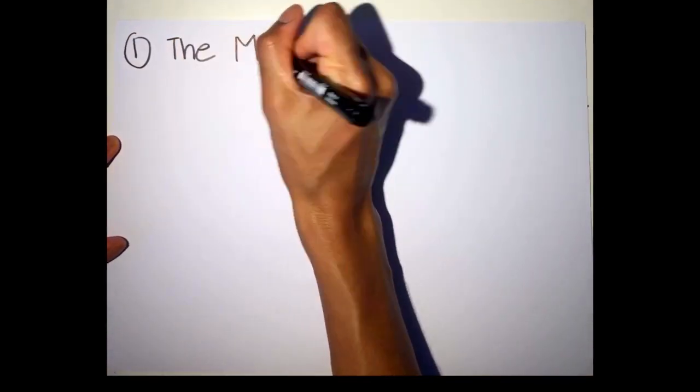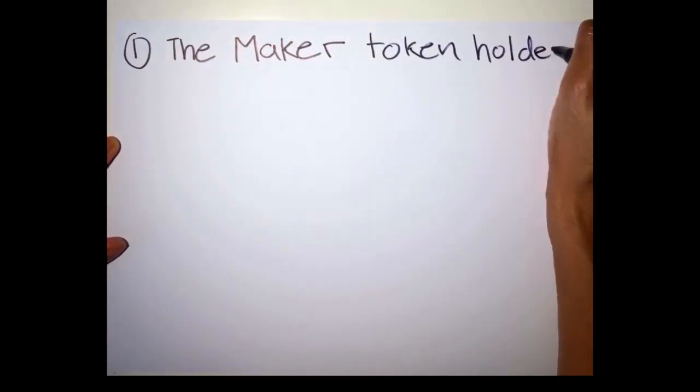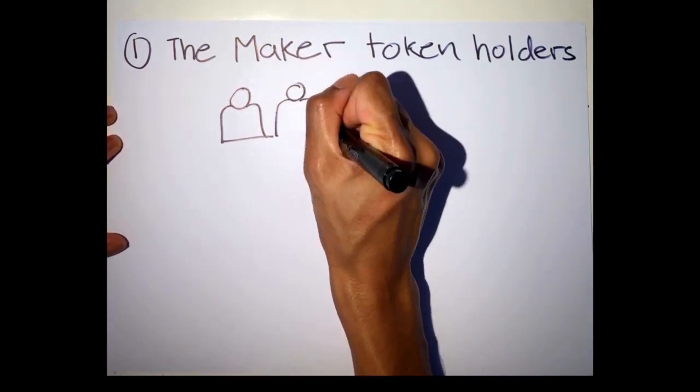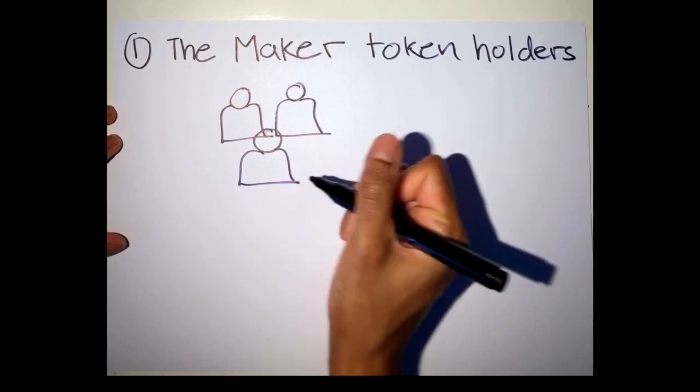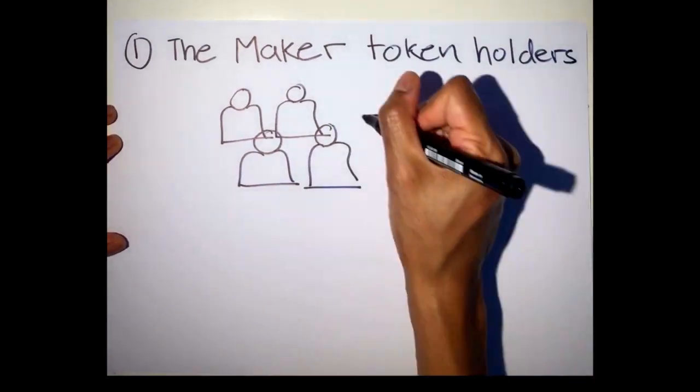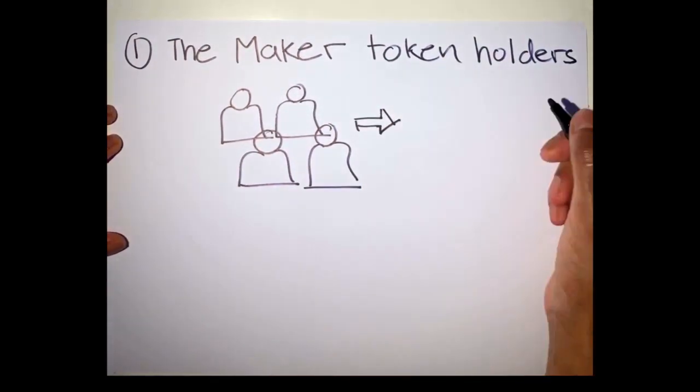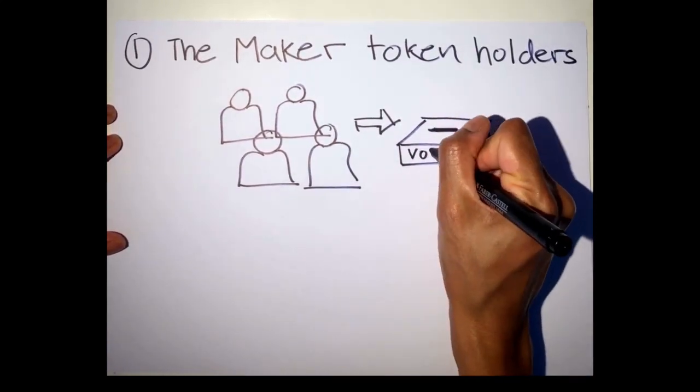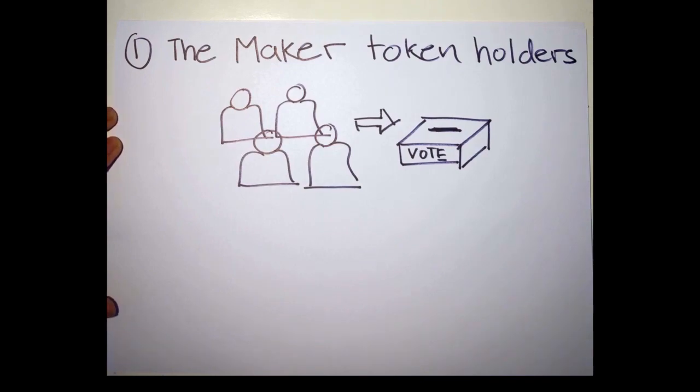First would be the Maker token holders. They cast votes to decide on new proposals that come through. Since cryptocurrencies and blockchain technology eliminate central authority, it needs people who share the vision of MakerDAO to come together to participate and vote on proposals to improve and maintain the protocol.